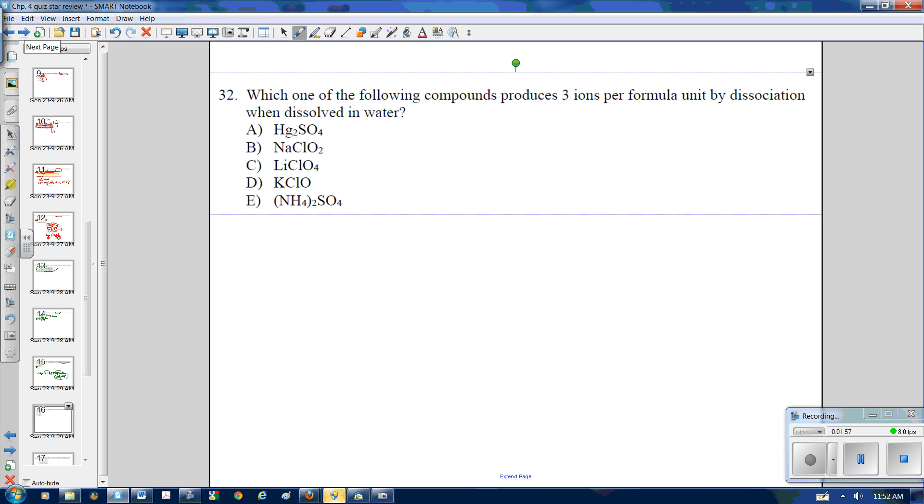Which of the following compounds produces three ions per formula unit dissociation? Well, if you look right here, this one, you have two Hg's, one SO4. That's going to produce three ions right there. This is going to, if you split it, produce two. Split this, produces two. Split this, produces two. This one produces three.